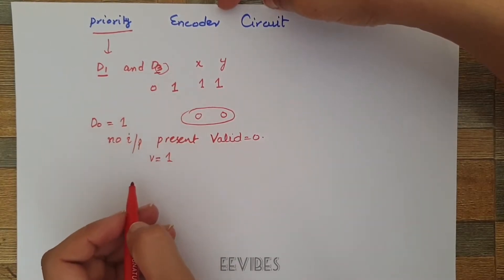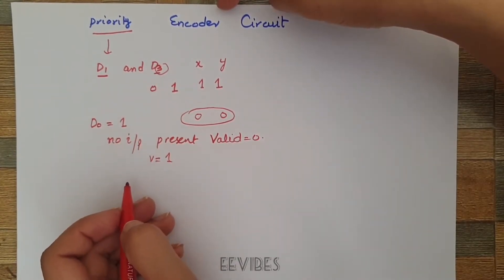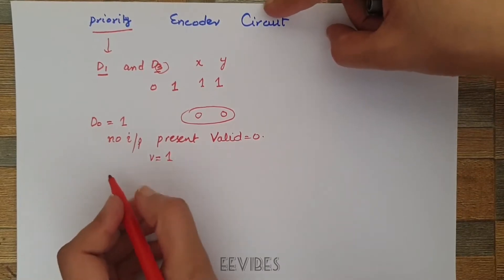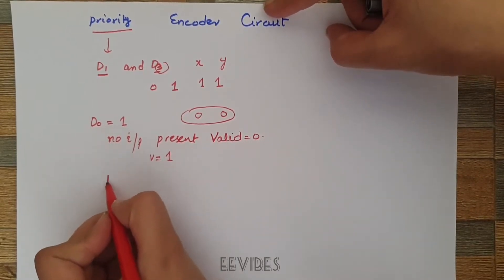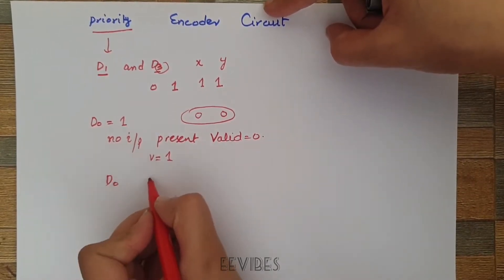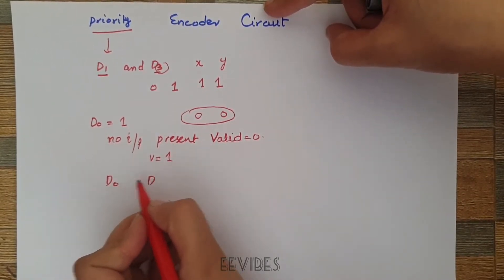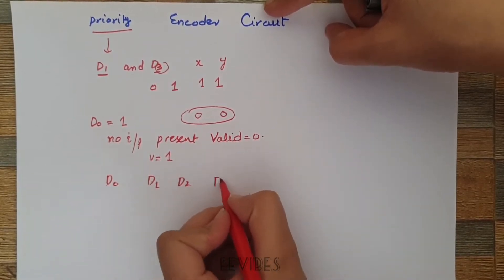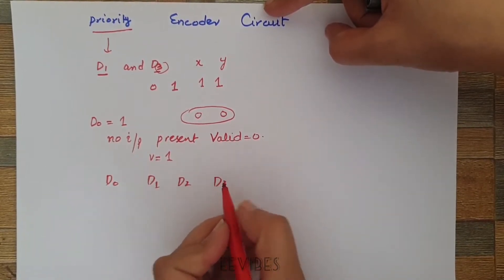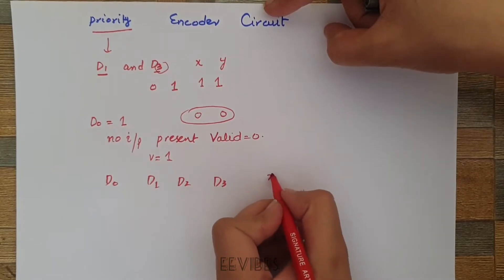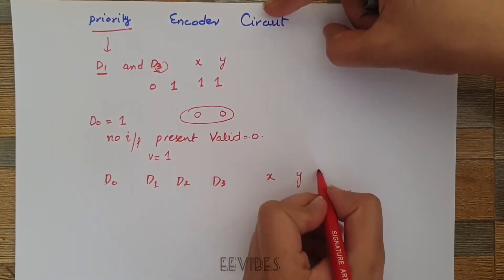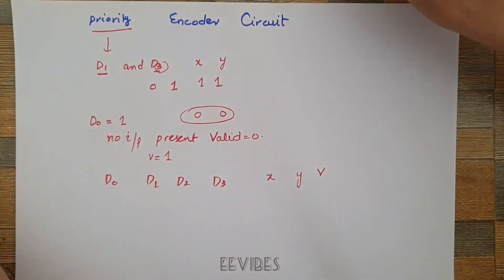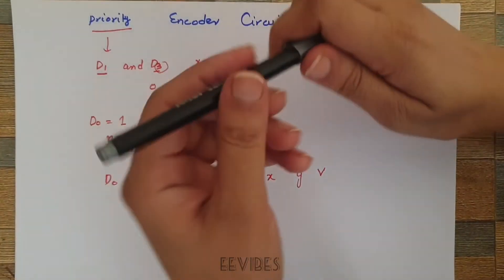Using these two concepts we will design a priority encoder circuit. Starting from the 4-to-2 line encoder, we have input lines D0, D1, D2, and D3, output lines x and y, and an additional output V — the valid input indicator.